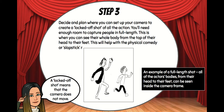Step three: you need to decide and plan where you can set up your camera to create a locked-off shot. A locked-off shot means that the camera does not move, because in the olden days, especially 100 years ago, the equipment was so big that they couldn't pick up the camera and move it. You'll need enough room to capture people in full length — that's when you can see their whole body — and down the bottom here you've got an example of how you can see the whole body of those people.